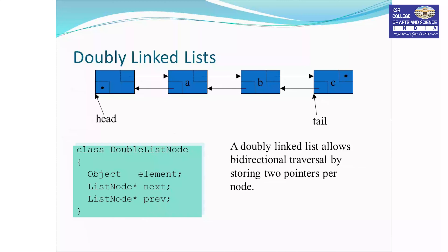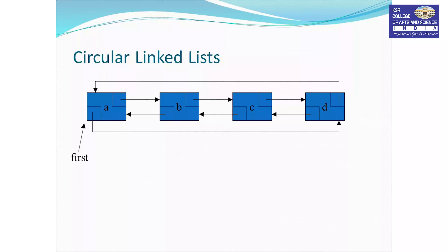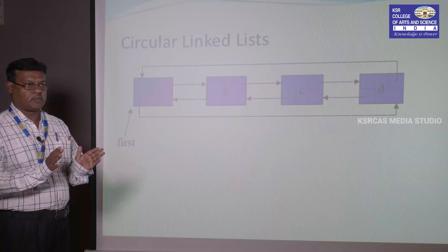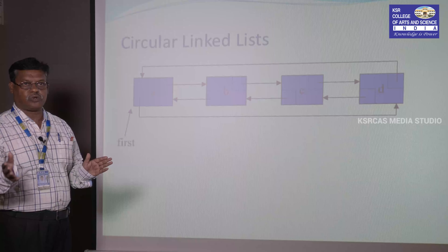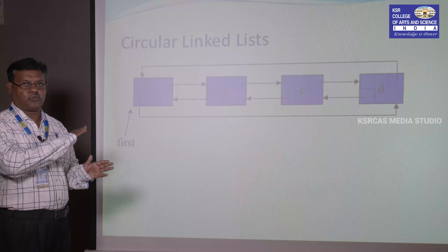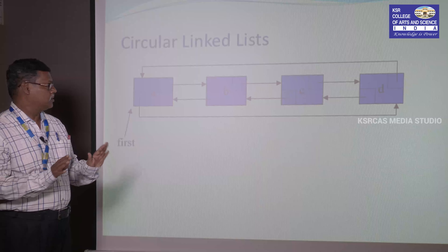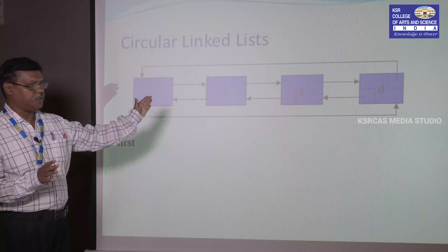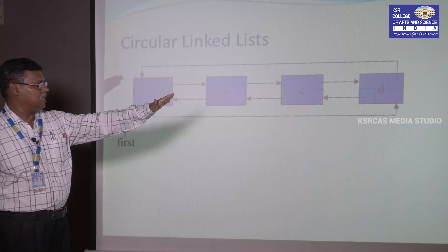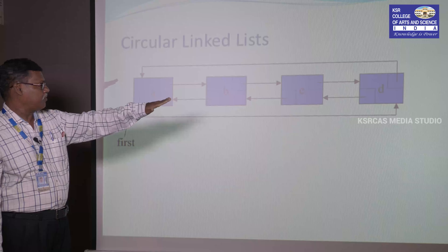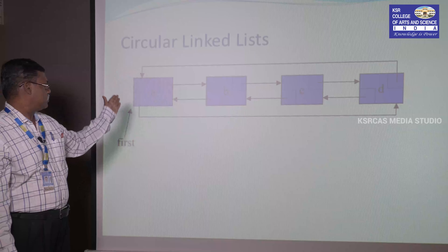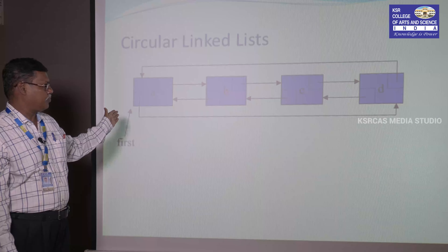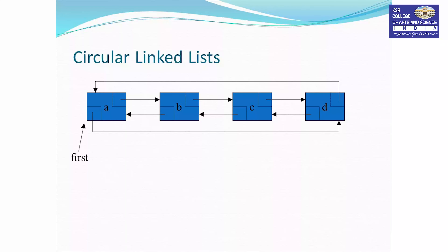Next is the circular linked list. The main concept is that the last node points to the first node, and the first node points back from the last node. Node A points to B, B points to C, C points to D — the next of the last node points to the first node, and the previous of the first node points to the last node.